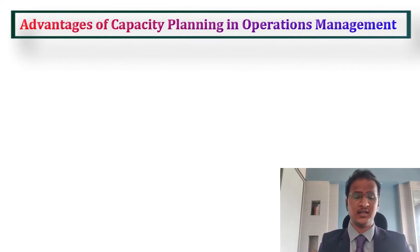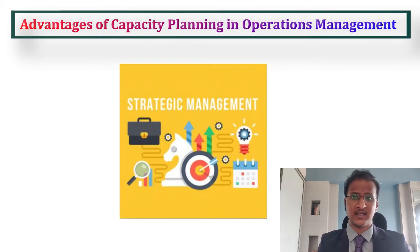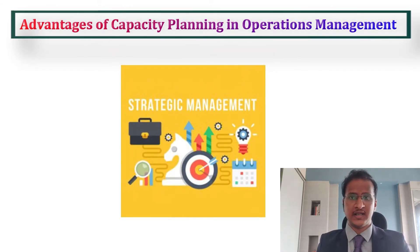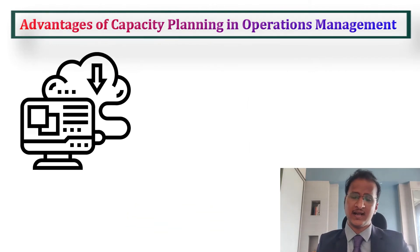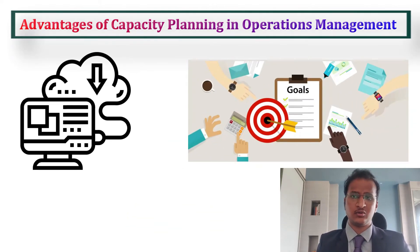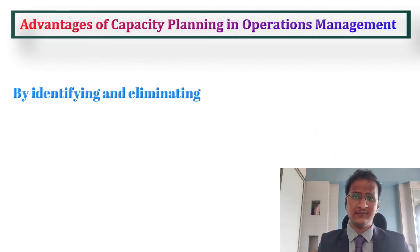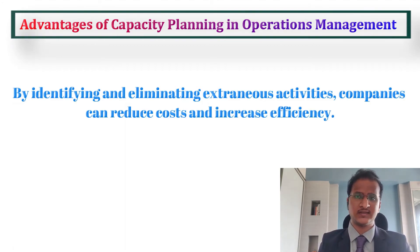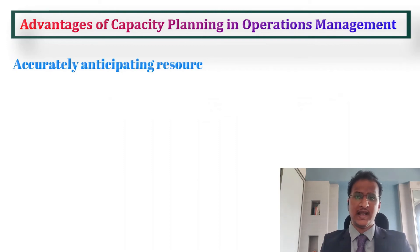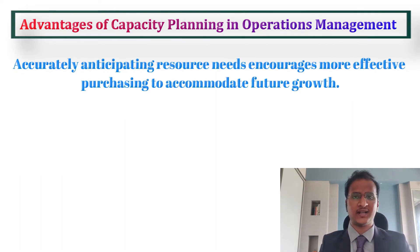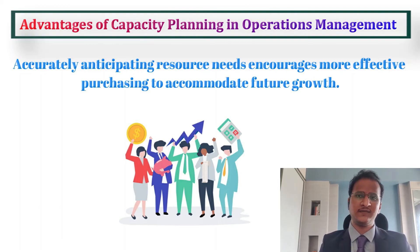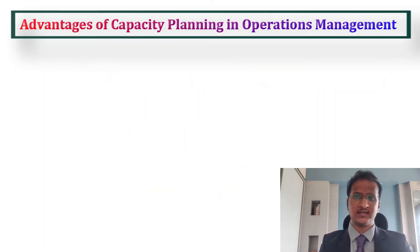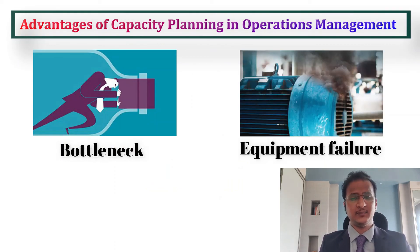The advantages of Capacity Planning in Operations Management are as follows. Strategizing capacity in Operations Management ensures that systems are operating at adequate levels to achieve company goals without over-provisioning resources. By identifying and eliminating extraneous activities, companies can reduce costs and increase their efficiency. Accurately anticipating resource needs encourages more effective purchasing to accommodate future growth. Production obstacles such as bottlenecks and equipment failures can be predicted and avoided altogether with constant monitoring of hardware as well as software operations.